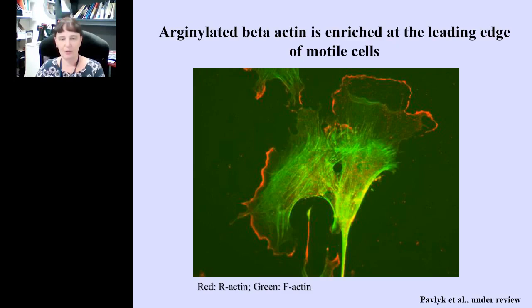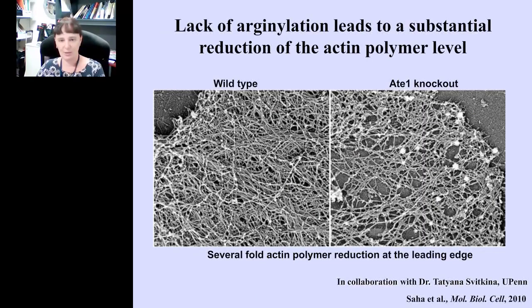Sometime later, we generated antibodies to arginylated beta-actin, and we are now able to stain cells with this antibody to find out more about the functionality of this modification. Remarkably, we find that in migrating fibroblasts — where total F-actin is stained in green — arginylated beta-actin stained in red is specifically concentrated at the leading edge of the cell. This resembles the beta-actin localization pattern but is even more specific. Arginylated beta-actin appears to be specifically enriched at the leading edge of motile cells, and this localization is abolished in cells that are not migrating.